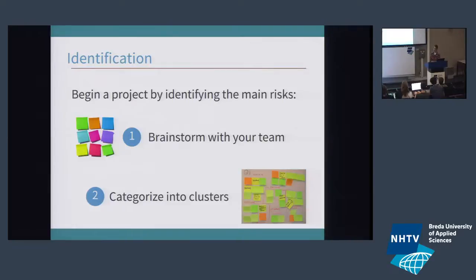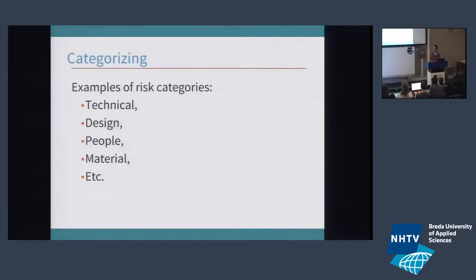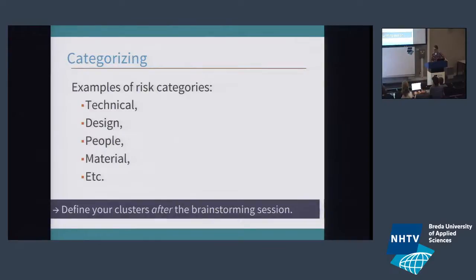You categorize these into clusters — categories of risks, which could be technical, design, people, resources, or more specific ones like progression design or core mechanics. It's important that you define these clusters afterwards. If you define the clusters first, you're going to be looking for answers in specific categories. You want to do a free brainstorm first and then cluster them into categories.